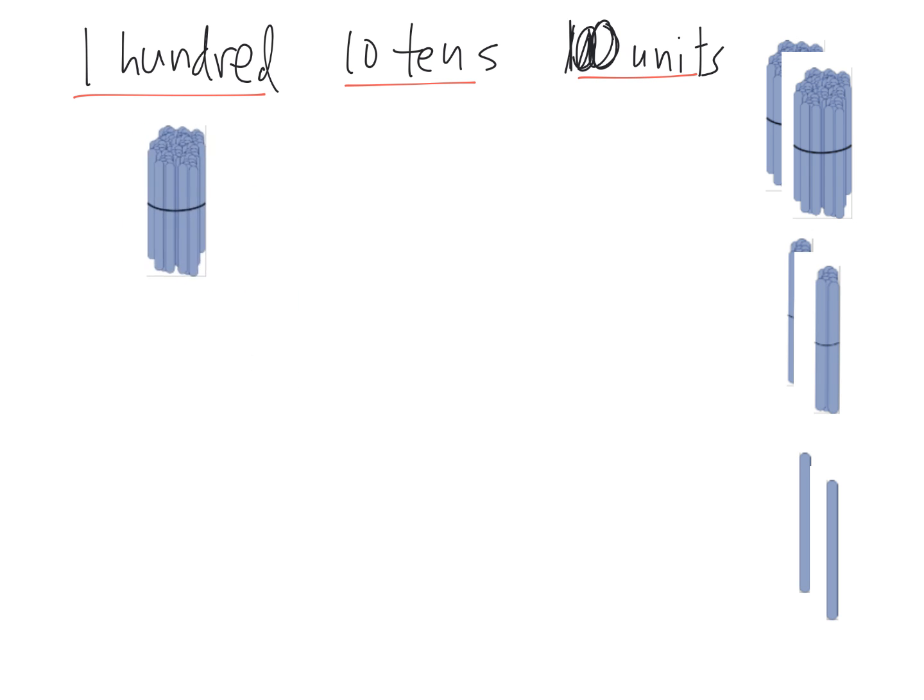The idea is students could say we have one hundred, but they also might say we have ten tens, or they might say we have one hundred units. In this case all three of these answers work because when we're talking about this guy it is one bundle of a hundred, but it's also ten bundles of tens, or it could be a hundred of these individual units down here. We have a hundred of these individual ones.